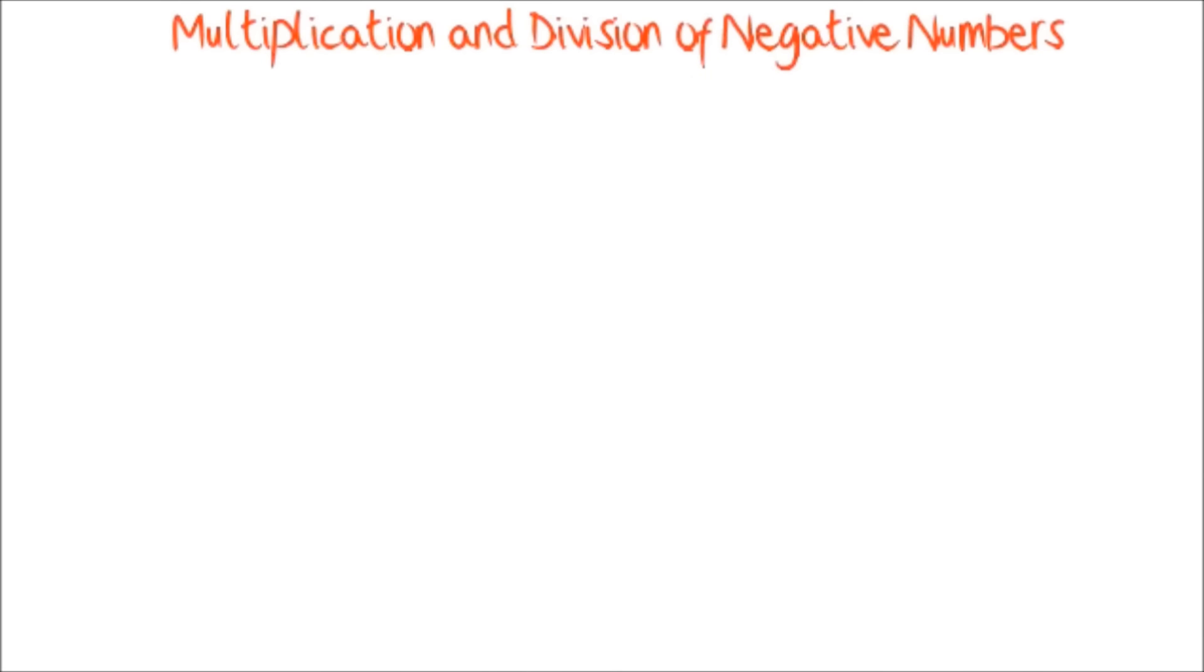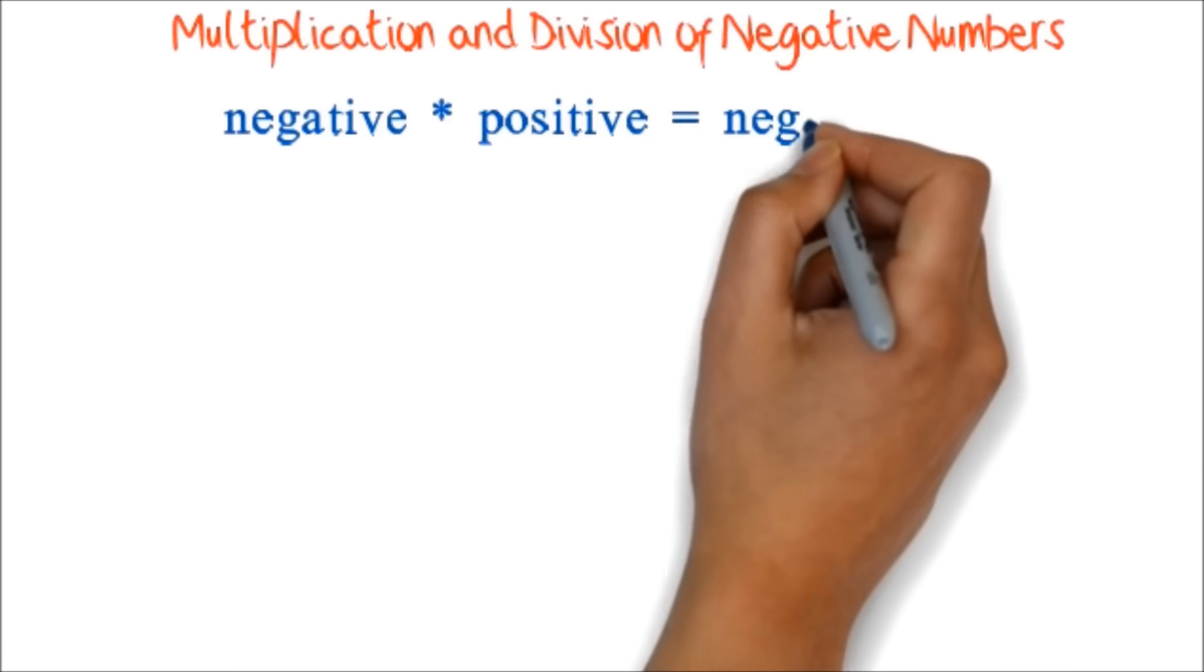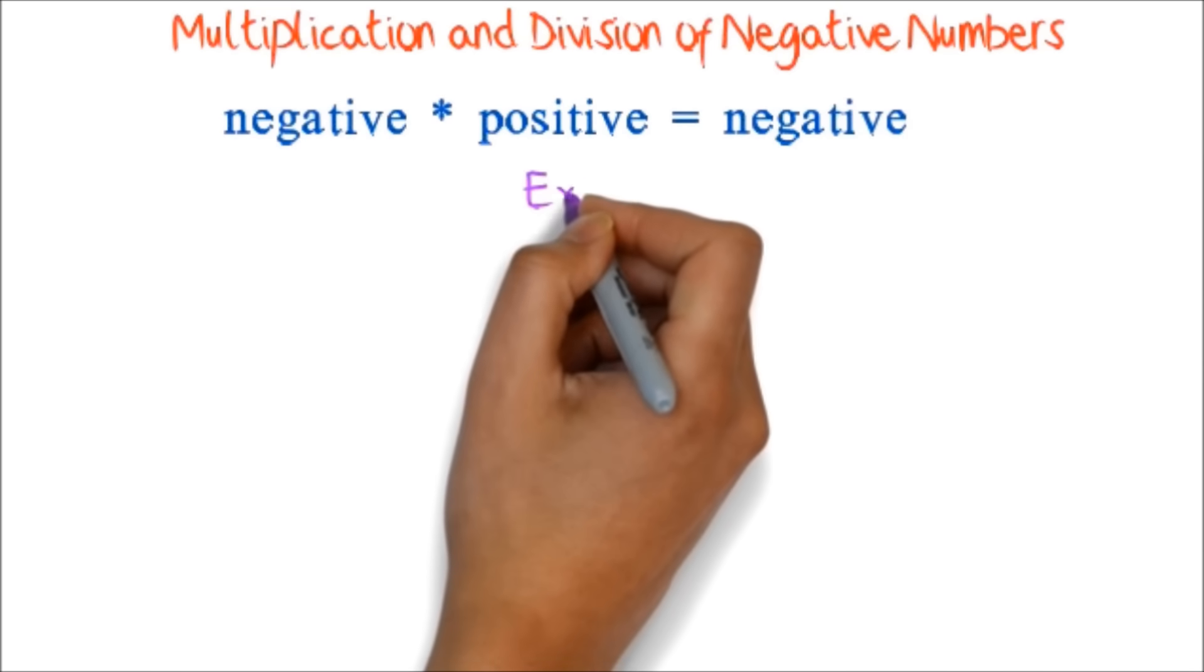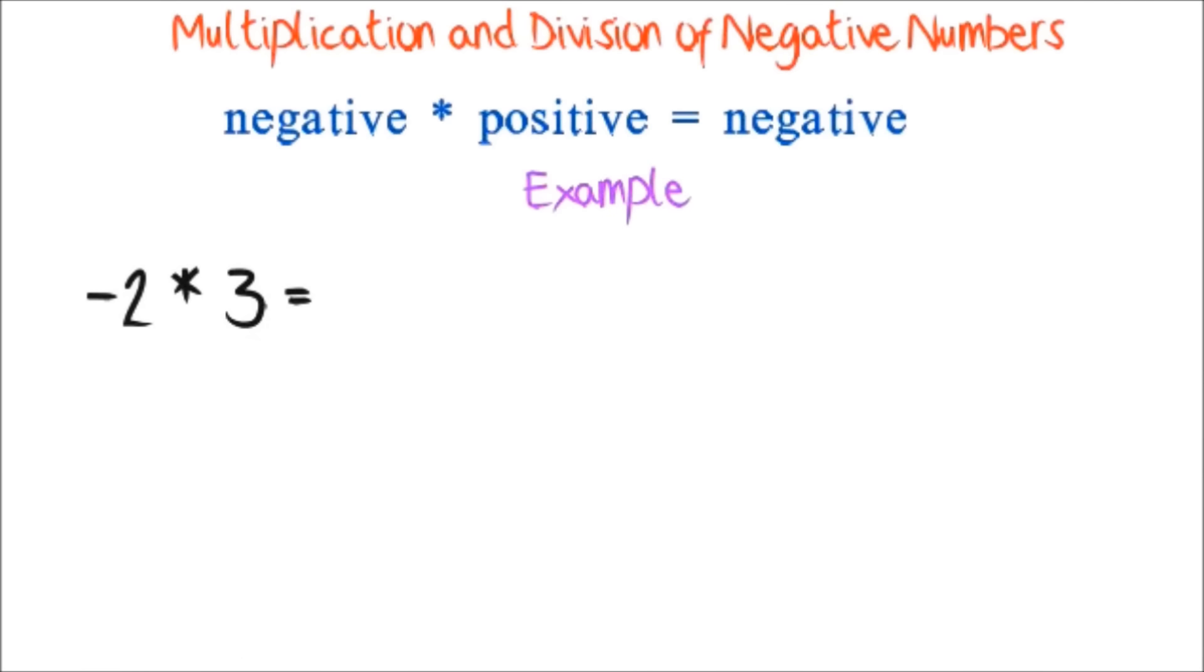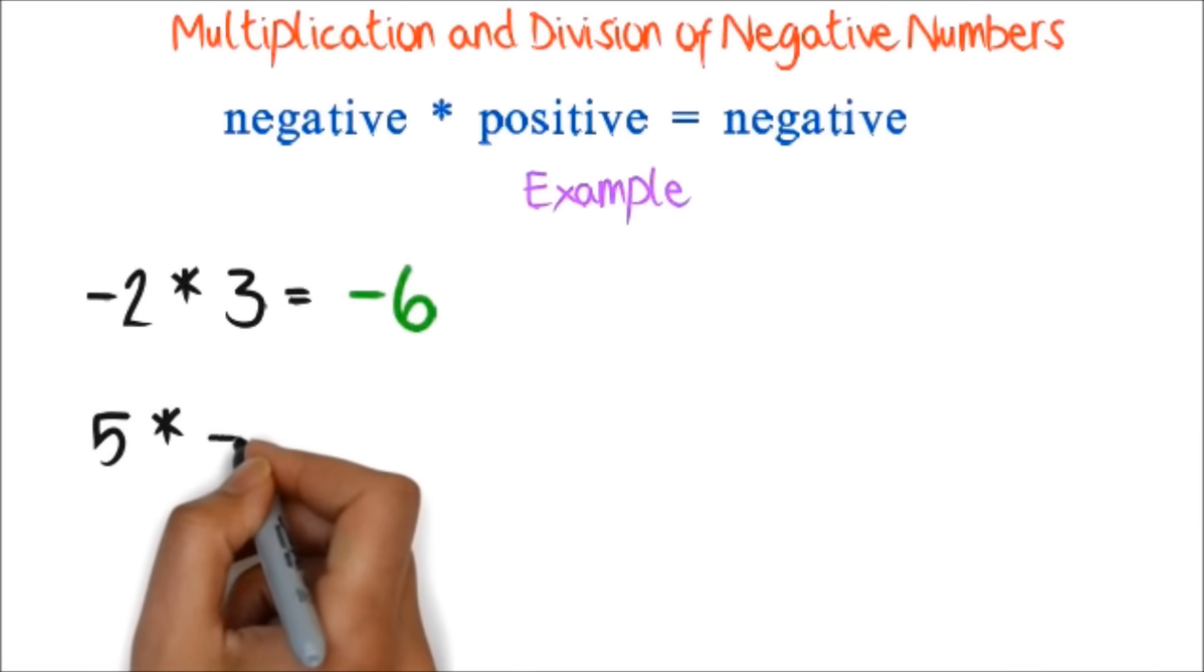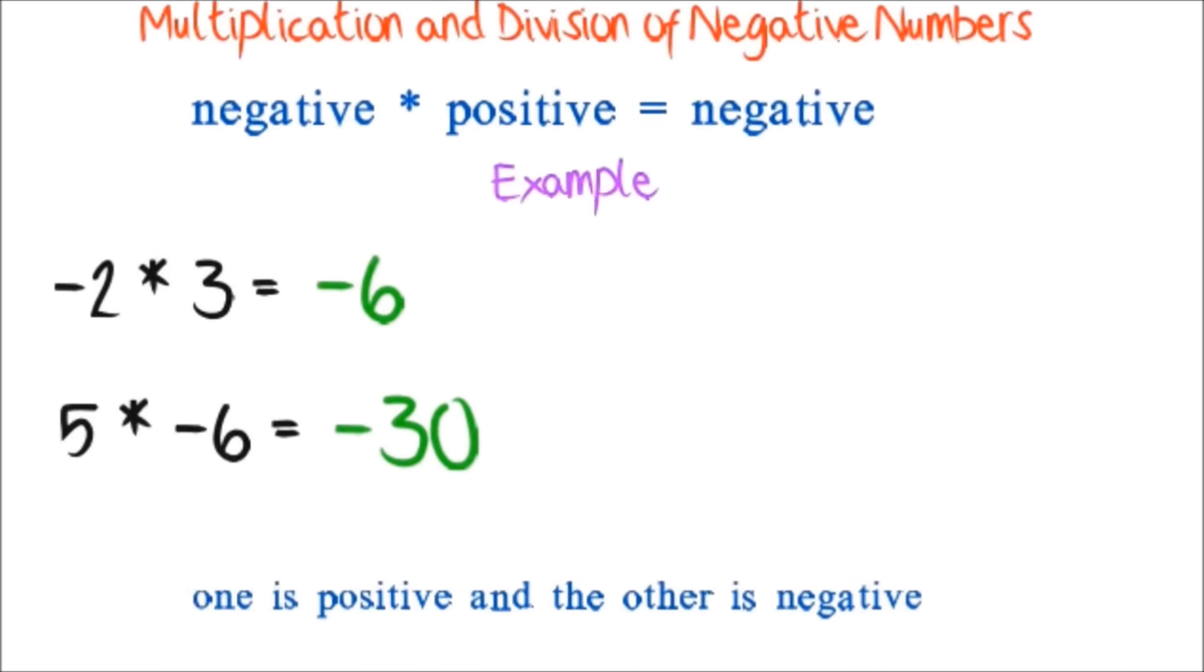The real problem in most cases is when negatives are introduced. When you multiply a negative and a positive number, the answer is always negative. Example, Negative 2 times 3 equals negative 6. 5 times negative 6 equals negative 30. Notice, in both cases, one is positive and the other is negative.